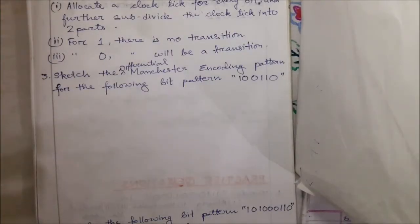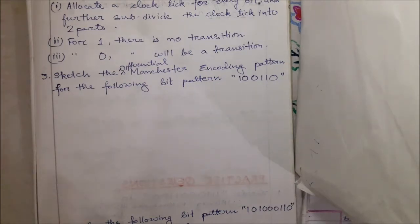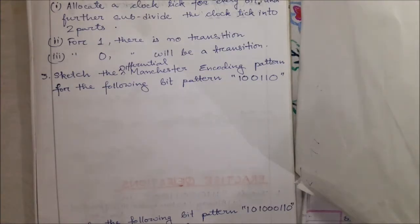Now let us look at differential Manchester encoding. We allocate a clock tick for every bit and subdivide it into two parts. For bit 1, there is no transition. For bit 0, there is a transition — meaning if the signal is low it becomes high, and if it is high it becomes low.